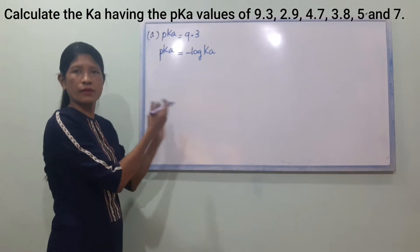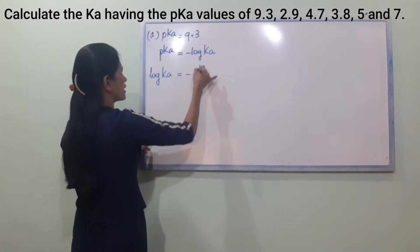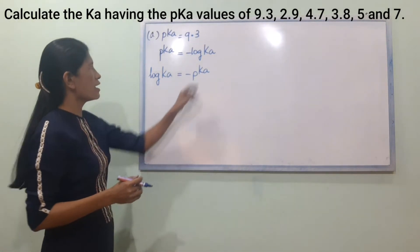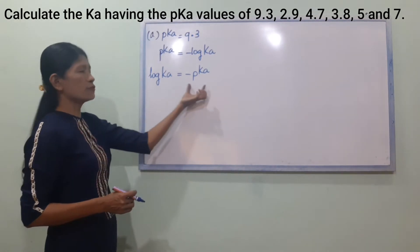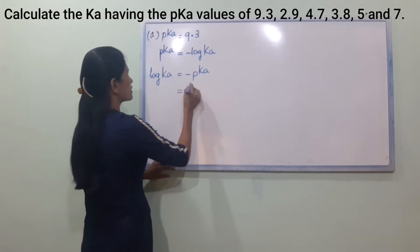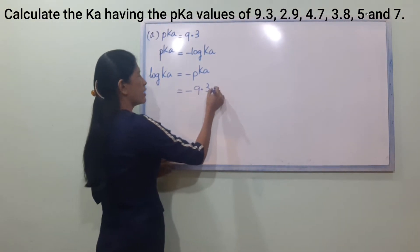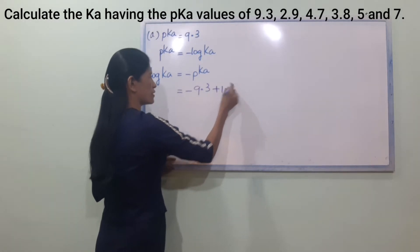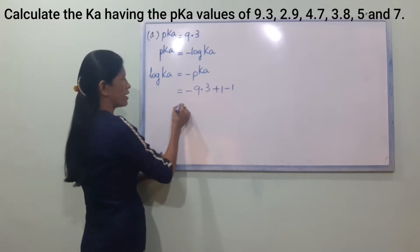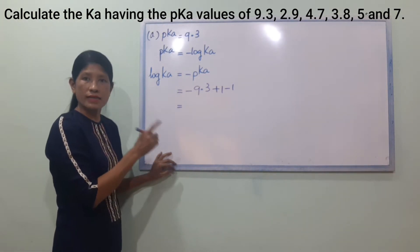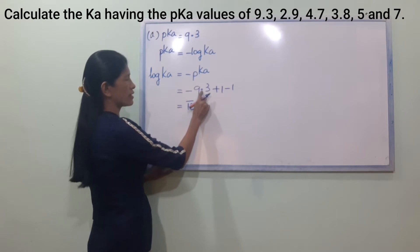PKA is equal to minus log Ka. As we explained, log Ka is equal to minus PKA. If we write minus log Ka is equal to 9.3, then log Ka is equal to minus 9.3. So log Ka equals negative 9.3, which means log Ka is equal to minus 1 plus minus 8, giving log Ka equals 0.3 minus 10, so log Ka is equal to 0.3 and the exponent is minus 10.